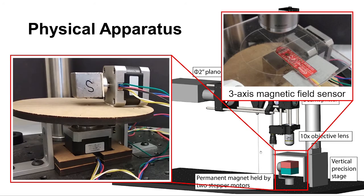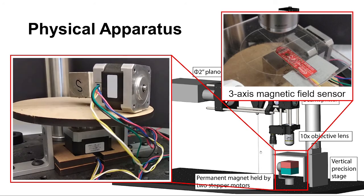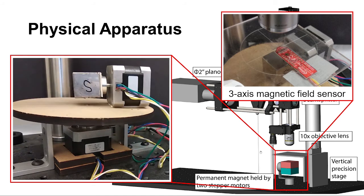The magnet module comprises a 1-inch permanent magnet, two stepper motors, and a 3-axis magnetic field sensor.